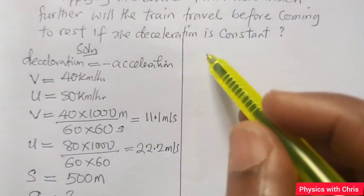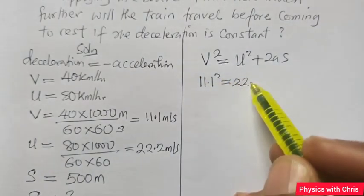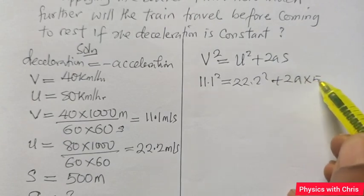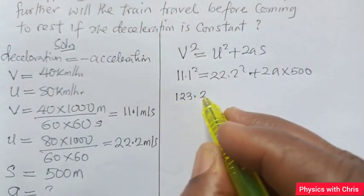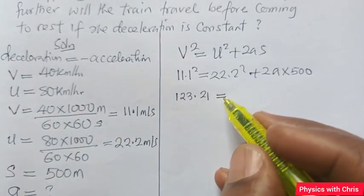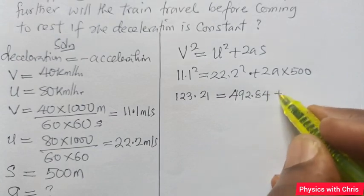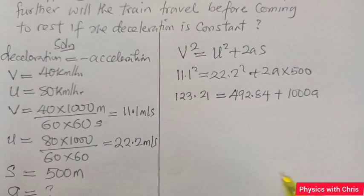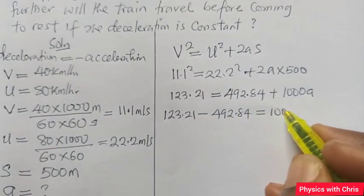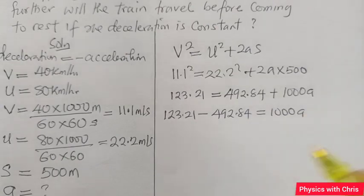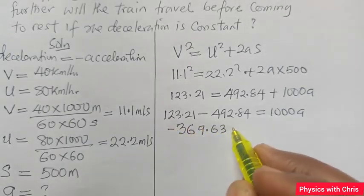I will recall that equation: v² = u² + 2as. My v is 11.1² equals 22.2² plus 2 times a times 500. Now 11² is 123.21 equals 22.2² which gives me 492.84, plus 2 times 500 gives me 1000a. Collecting like terms, 123.21 minus 492.84 equals 1000a. The difference gives me -369.63 equals 1000a.